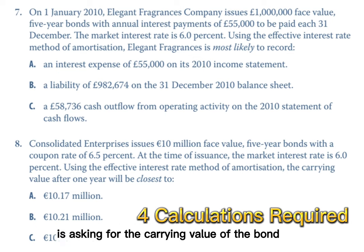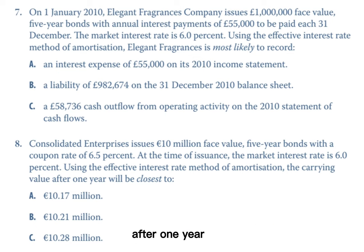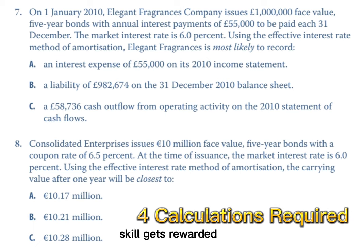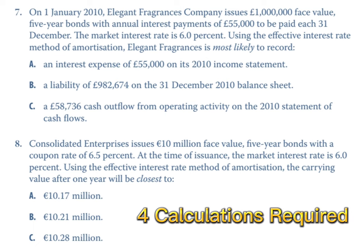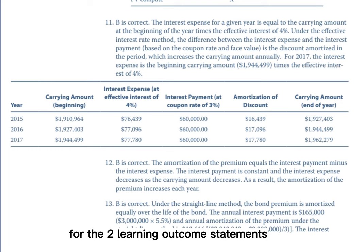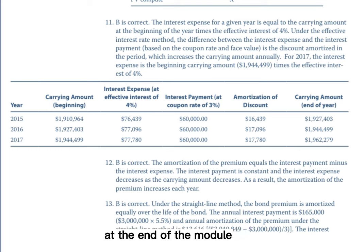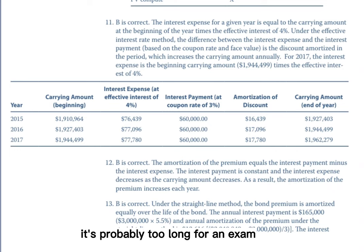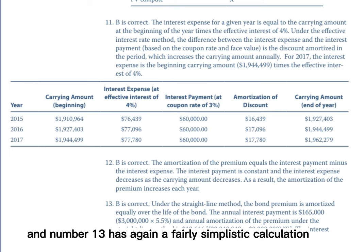Question number eight asks for the carrying value of the bond after one year — speed is a skill and skill gets rewarded. That involves working through the table as shown in the study guide, with four calculations required. For the two learning outcome statements there are basically 13 practice problems at the end of the module. Number 11 is very mechanical and probably too long for an exam, number 12 is a simple rule, and number 13 has a fairly simplistic calculation.